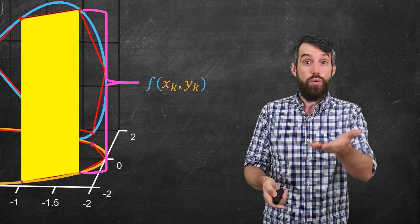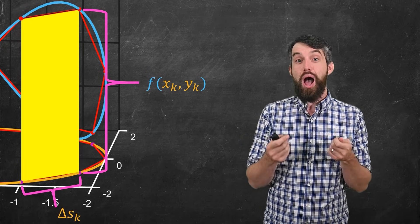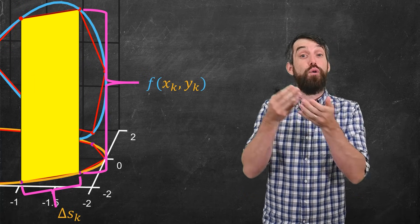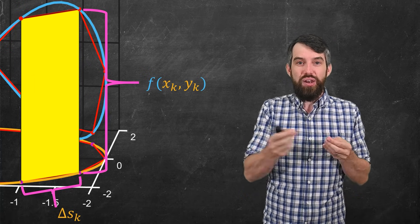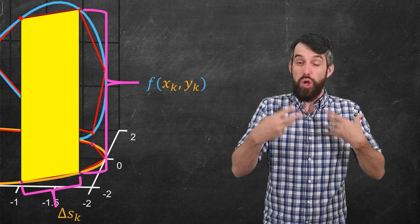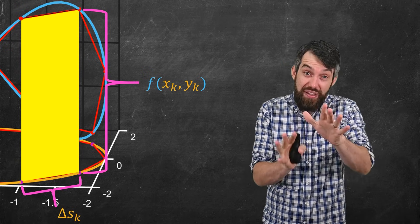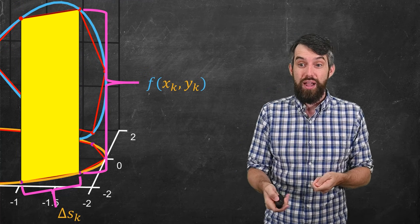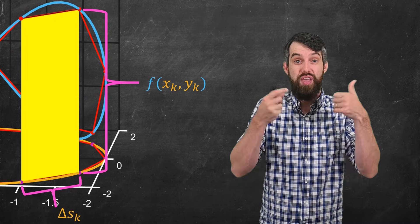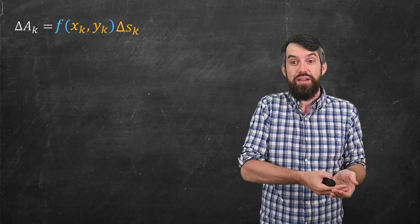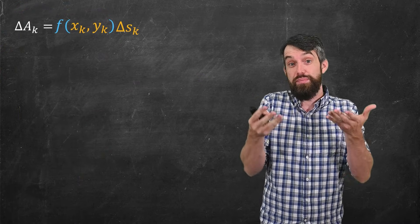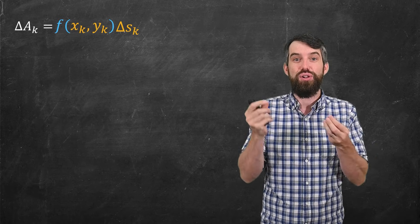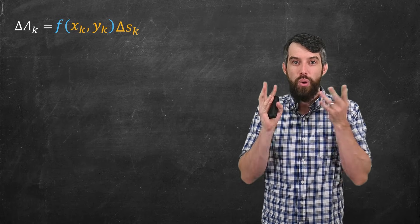So that's the height, and then what about the base? The base now I call Δs_k. S is the symbol for arc length. So basically I'm saying, I've got a little arc length down here on the bottom, I'm going to call that Δs_k, we're going to investigate it more in a moment, but right now I'm just going to call it s_k. And then, well, what's my rectangle? It's these two things, but just multiplied together. It's got the height, f(x_k, y_k), and then it's got the width, the Δs_k. And together, that is my Δa_k, my little area, my kth area.